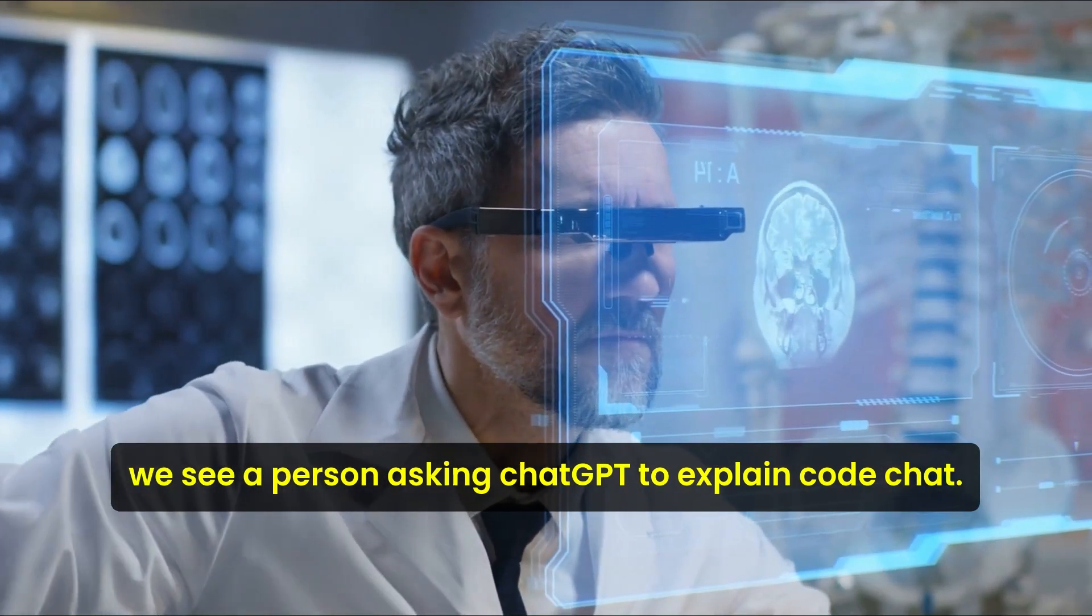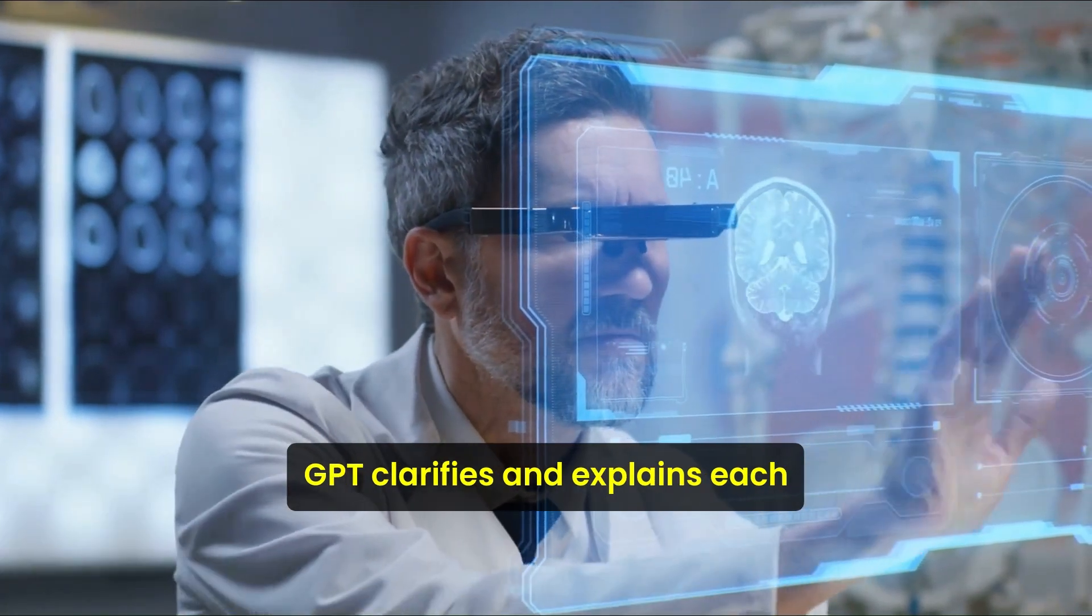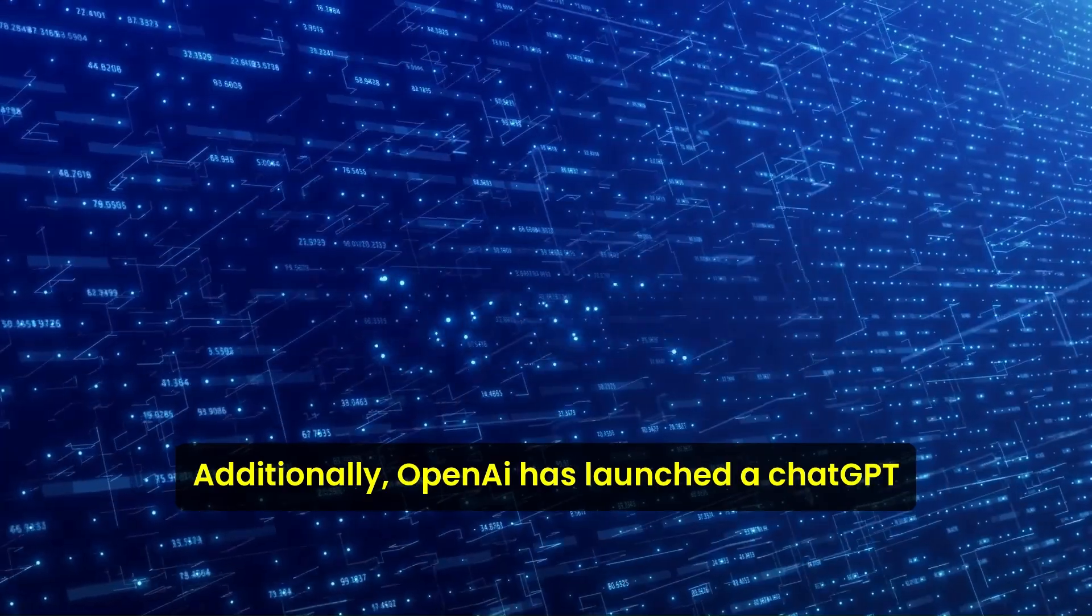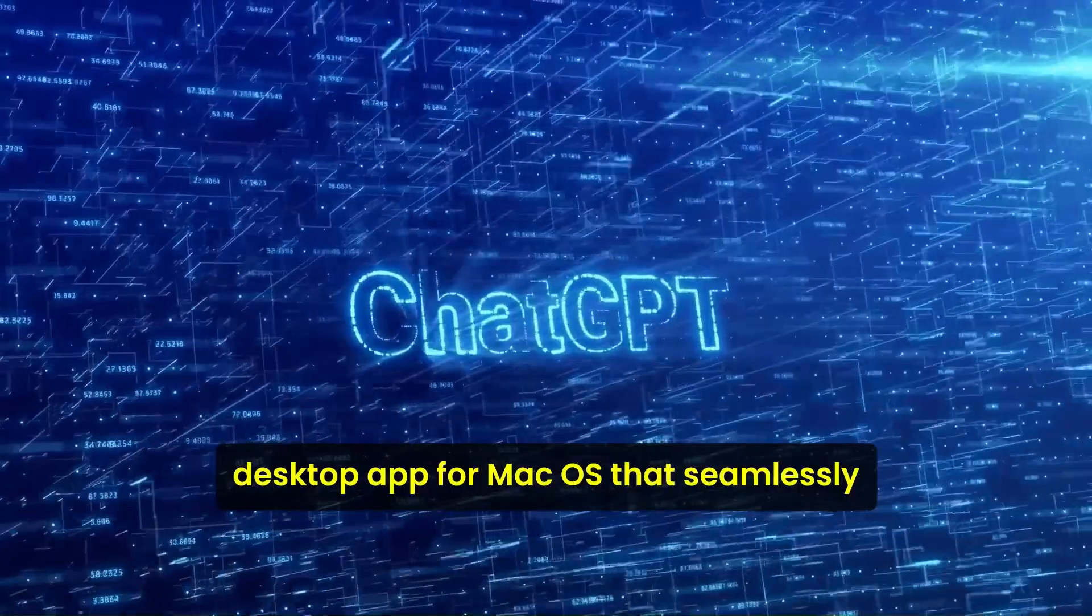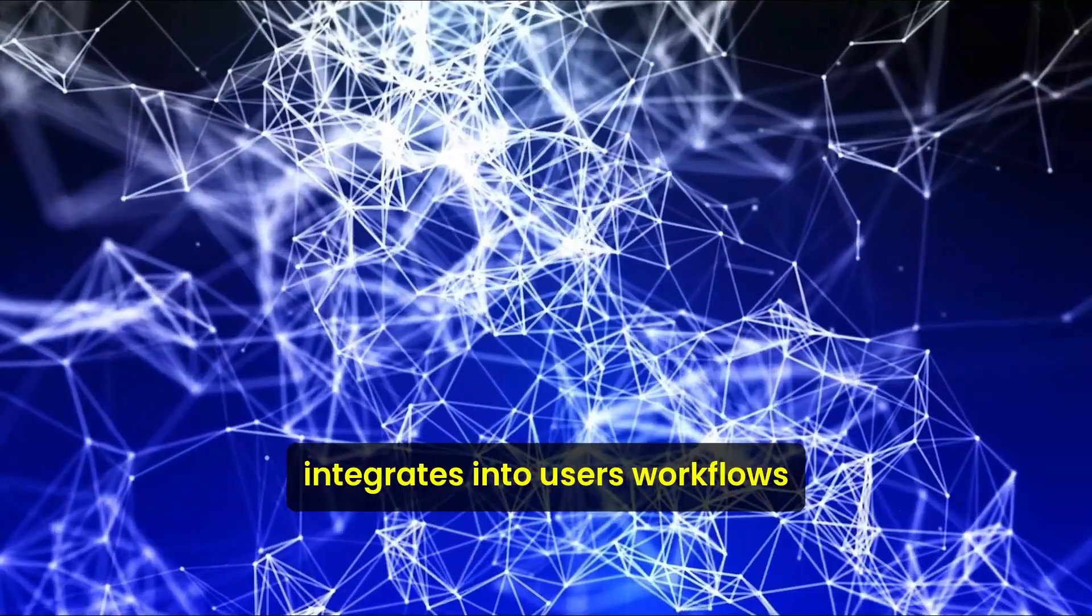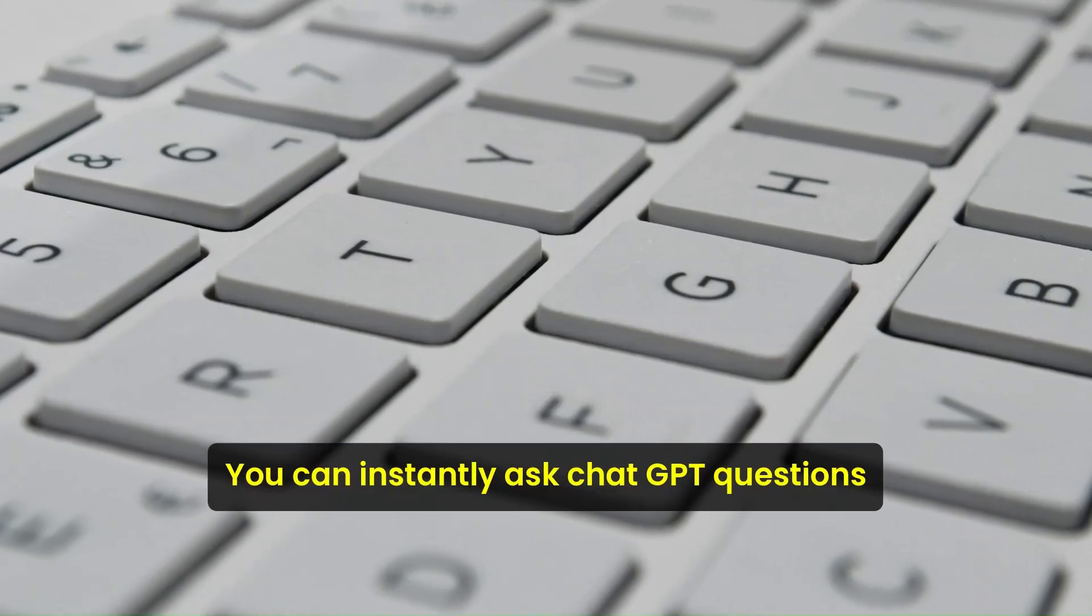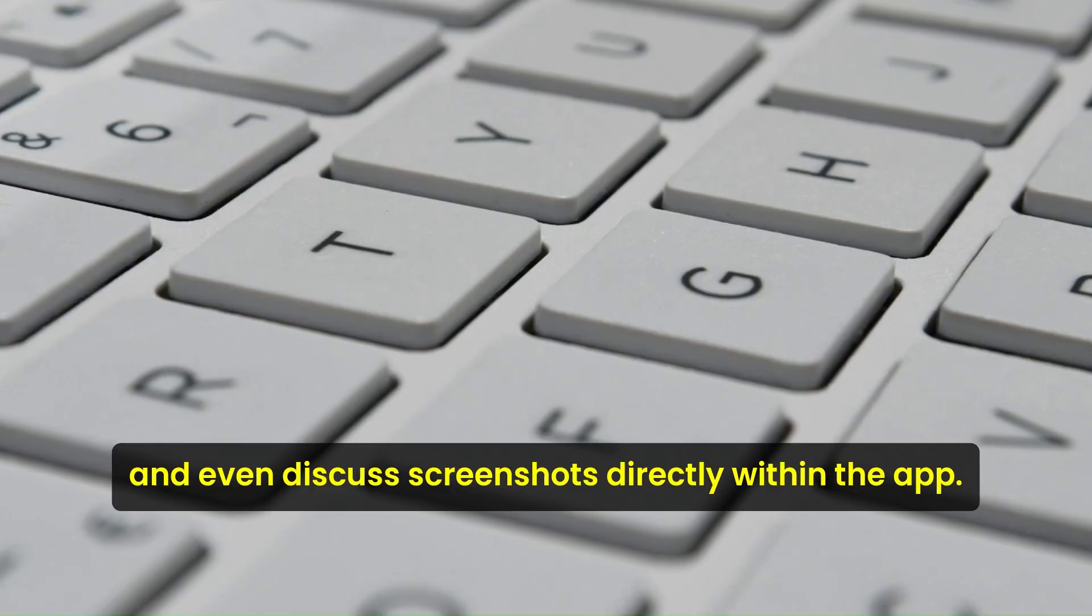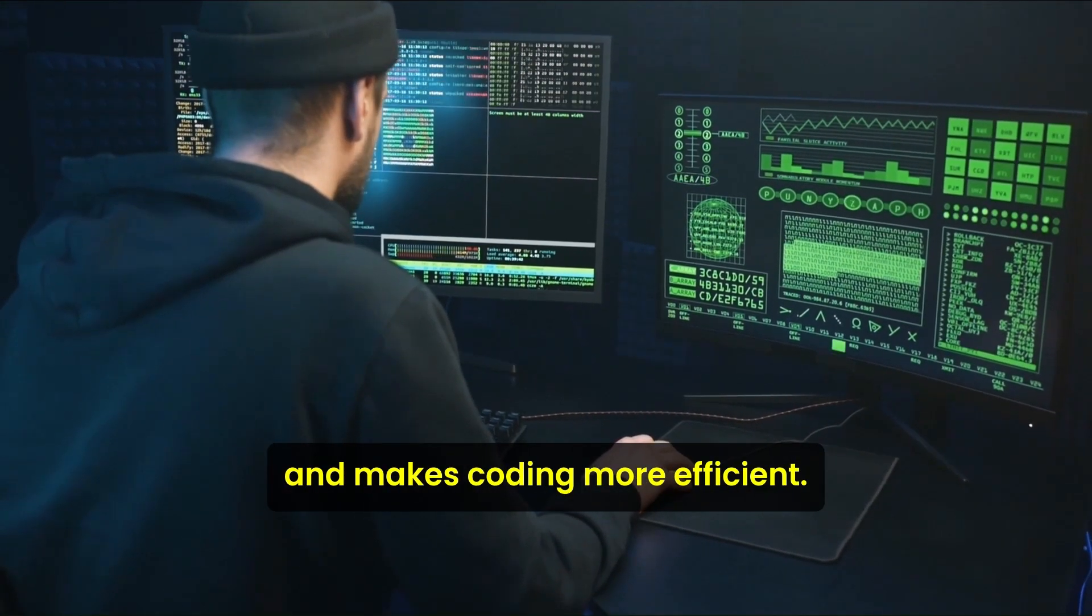In this video, we see a person asking ChatGPT to explain code. ChatGPT clarifies and explains each and every line, clearing doubts along the way. Additionally, OpenAI has launched a ChatGPT desktop app for macOS that seamlessly integrates into users' workflows. With a simple keyboard shortcut, option plus space, you can instantly ask ChatGPT questions and even discuss screenshots directly within the app. The desktop app enhances productivity and makes coding more efficient.